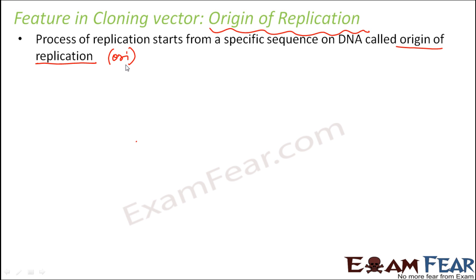It is very important to know that the process of replication doesn't just start from anywhere — there are specific locations or sequences on DNA from where it starts. This matters because when the foreign gene or foreign DNA is introduced into the host cell, our main purpose is that it should be able to replicate. For the foreign DNA to replicate, it should get connected to the origin of replication — it should be near the area where ORI is located.